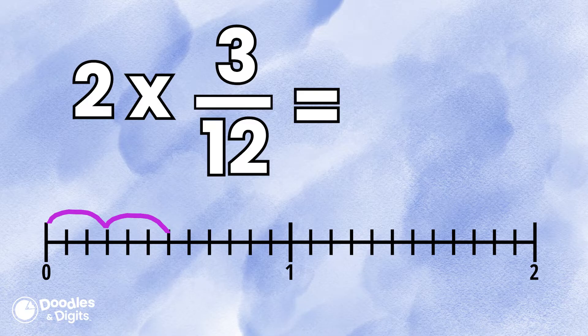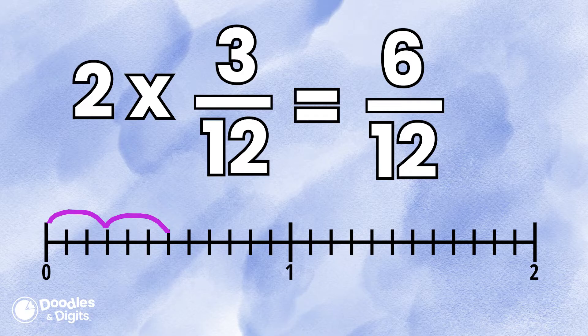We're going to do two jumps that are 3/12 each. Two times 3/12 equals 6/12.